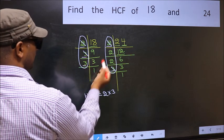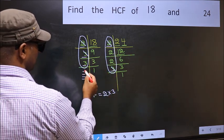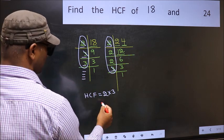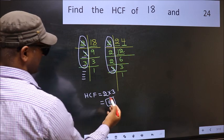Next number 3. Do we have 3 here? No. No more numbers have been left out. So our HCF is 2 times 3. 6 is our HCF.